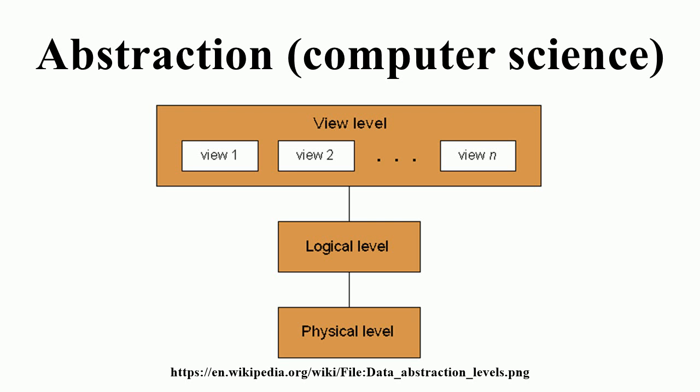Abstraction can apply to control or to data. Control abstraction is the abstraction of actions while data abstraction is that of data structures. Control abstraction involves the use of sub-programs and related concepts control flows. Data abstraction allows handling data bits in meaningful ways.